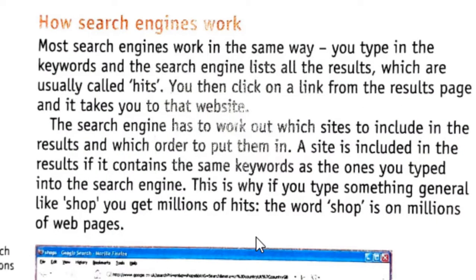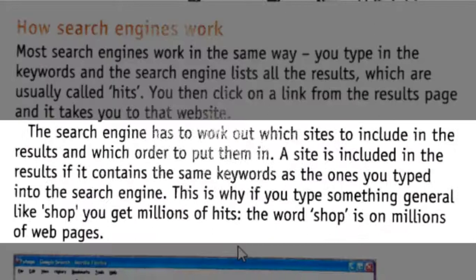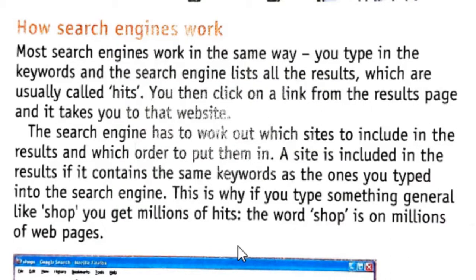How search engines work: most search engines work in the same way. You type in the keywords and the search engine lists all the results, which are usually called hits — each individual result is called a hit. You then click on a link from the results page and it takes you to the website. The search engine has to work out which sites to include in the results and which order to put them in.